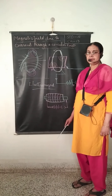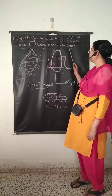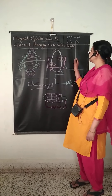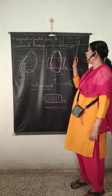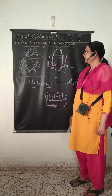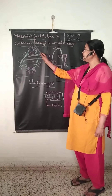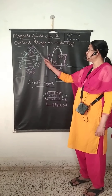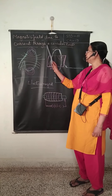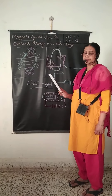Today we will discuss the continuation of chapter 13 of standard 10. We will discuss about the magnetic field due to a current through a circular loop.